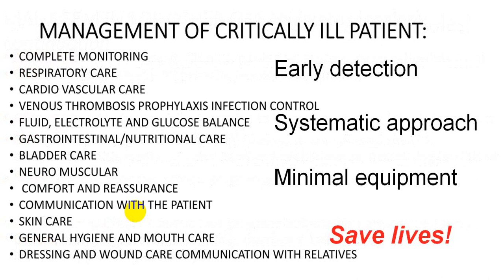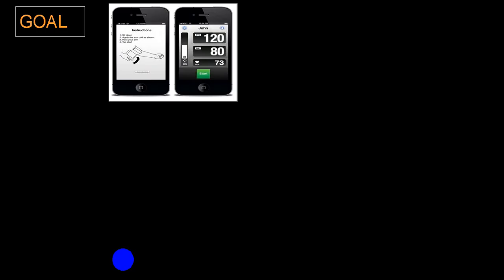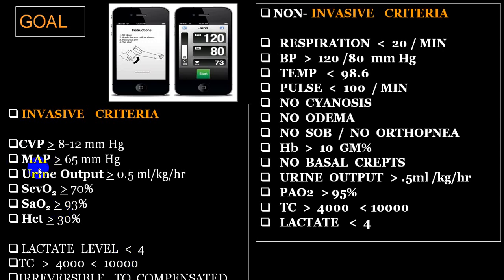Early detection, systemic approach, and minimal equipment will save a life. Complete monitoring includes respiratory care, cardiovascular care, prevention of deep vein thrombosis and pulmonary embolism, fluid and electrolyte imbalance treatment, glucose balance, nutritional care, GI care, bladder, eye, skin care, general hygiene, mouth care, and body position changes. Complete monitoring goals: maintain CVP, mean arterial pressure, urine output, oxygen, hematocrit; lactate level should be lowered. Look for total count, differential count. Non-invasive techniques can be easily done without much laboratory parameter.